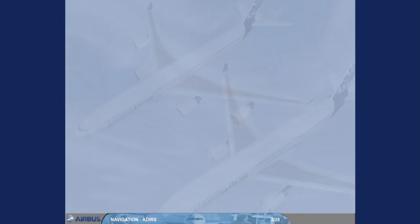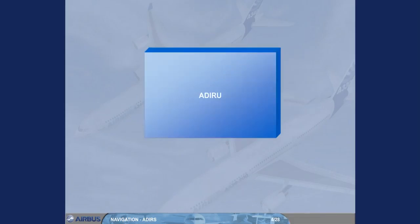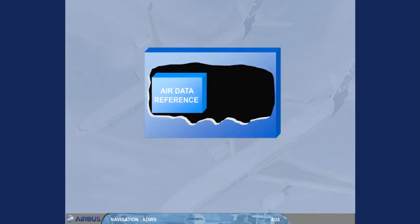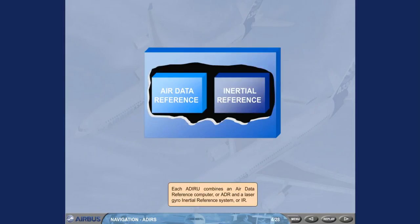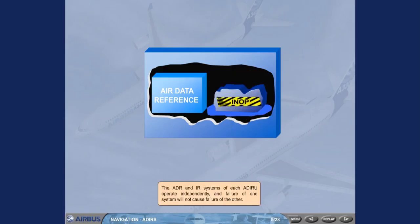The A330-A340 has three separate but identical AirData Inertial Reference Units. Each ADRU combines an AirData Reference Computer, or ADR, and a Laser Gyro Inertial Reference System, or IR. The ADR and IR systems of each ADRU operate independently and failure of one system will not cause failure of the other.